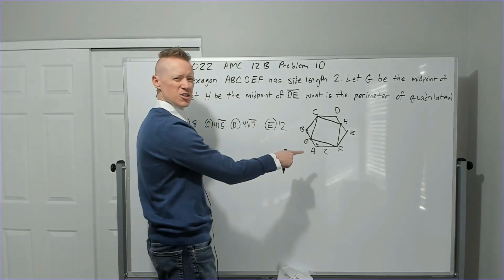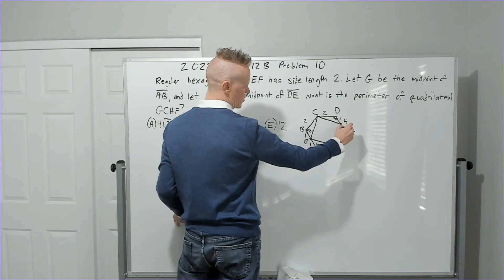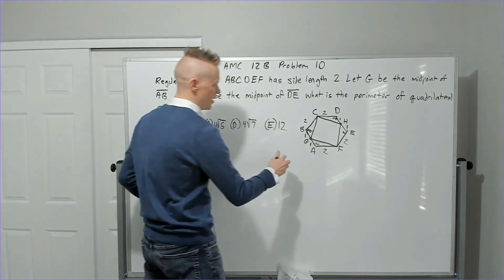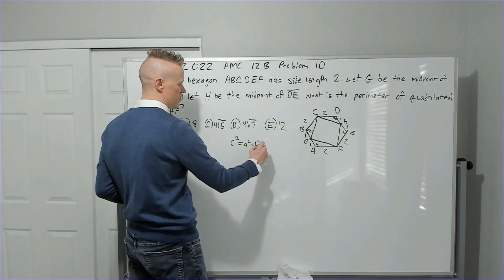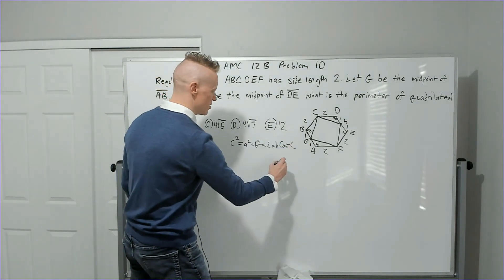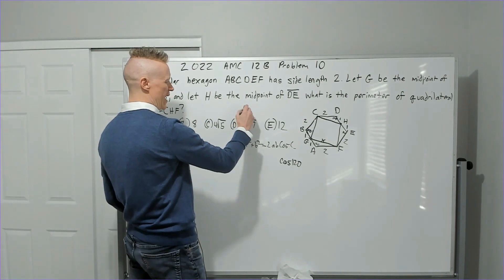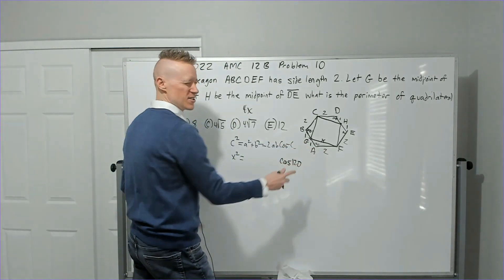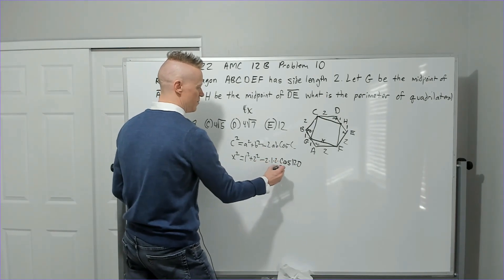In the regular hexagon each interior angle is 120°. Side length is 2, G is a midpoint so AG = GB = 1. By symmetry we have repeated triangles with sides 1 and 2 and included angle 120°. We apply the Law of Cosines: c² = a² + b² − 2ab·cos(C), with the side opposite 120° being the diagonal we want.